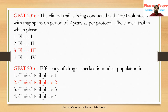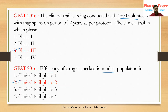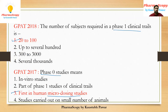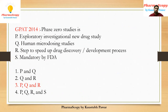In GPAT 2016, there were two questions from the concept of clinical trials. First: a clinical trial is being conducted with 1,500 volunteers over a period of two years — in which phase? The answer is phase three, because in phase three the volunteers are around 1,500 to 5,000. The second GPAT 2016 question was: efficacy of drug is checked in a modest population — the correct answer is phase two. In GPAT 2014, there was also a question on phase zero studies.